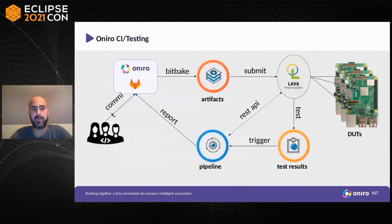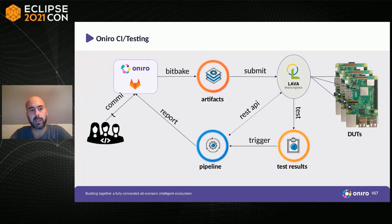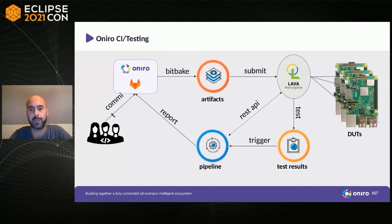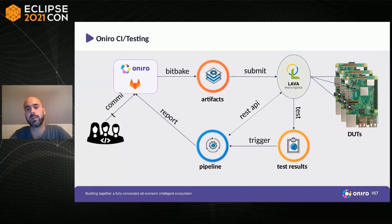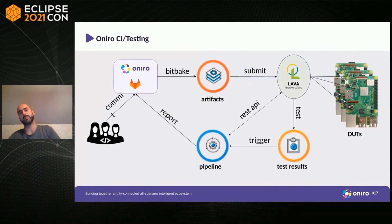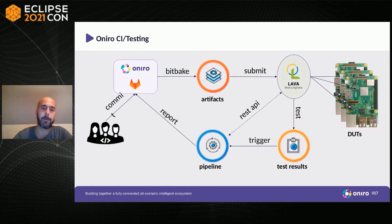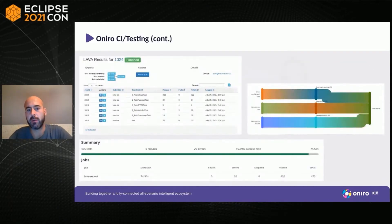Here is the CI testing loop in Oniro: developers commit code to GitLab repositories, BitBake checks out artifacts, and we submit testing jobs to LAVA with those artifacts. LAVA does all the testing on the devices, and once jobs finish, a pipeline in GitLab collects the results from the LAVA server via the REST API and reports back to GitLab, so on every merge request you can check if any tests are failing against all supported targets.